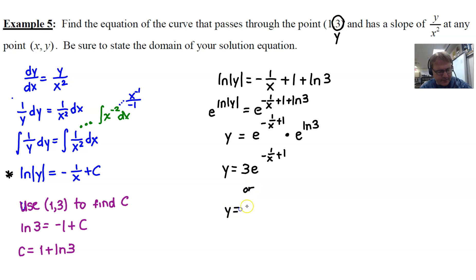Otherwise, you could combine and get a common denominator of x, and you would have essentially negative 1 plus x, or maybe x minus 1. So x minus 1 all over x could be that exponent, and that's perfectly fine.